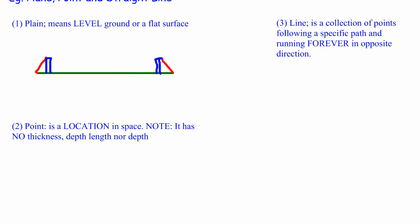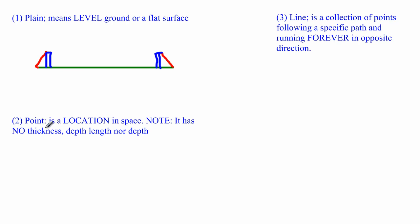The second term is: what is a point? A point is a location in space. I've put the word 'location' in bold because it's very important — we are not speaking about a dot. A point has no thickness, no depth, and no length.